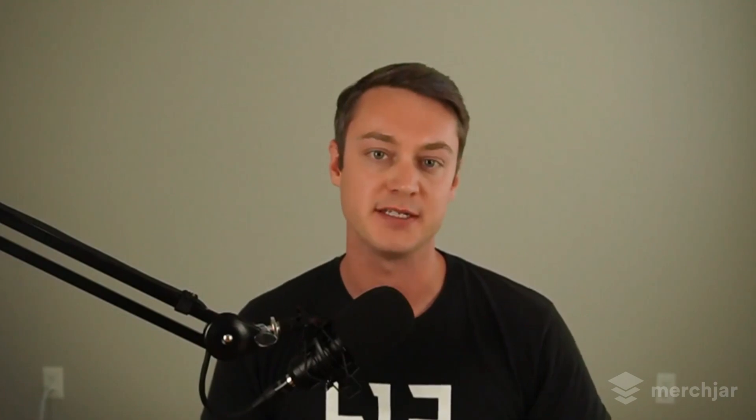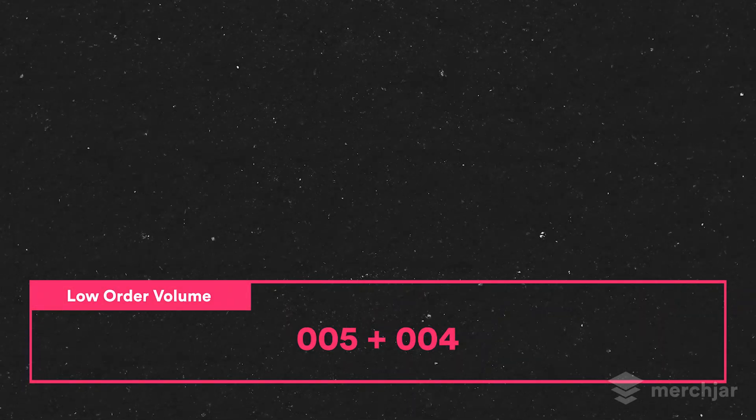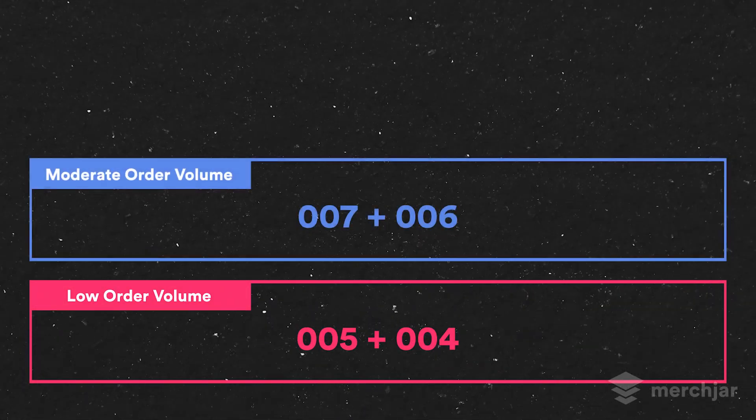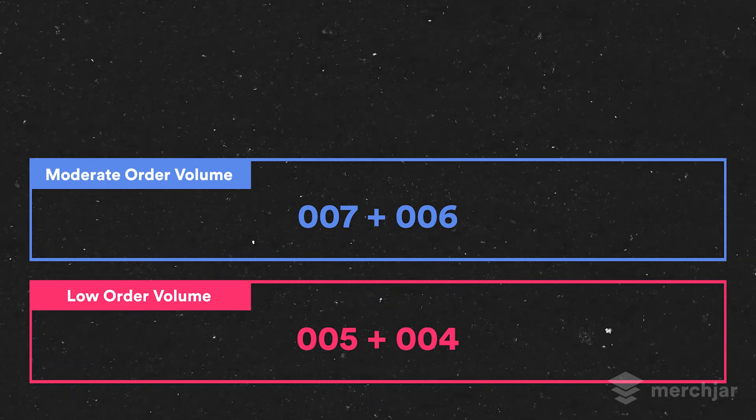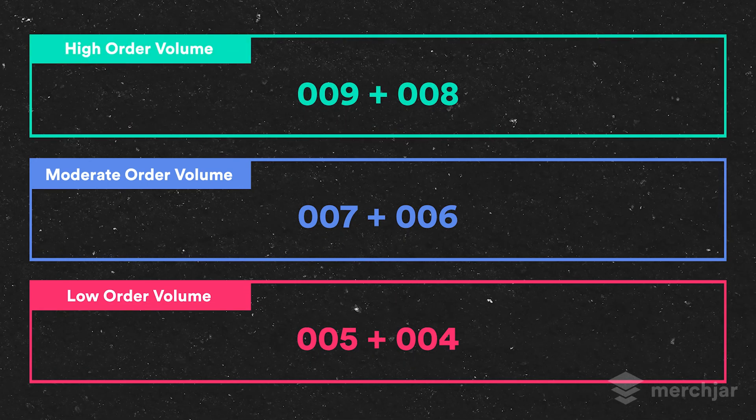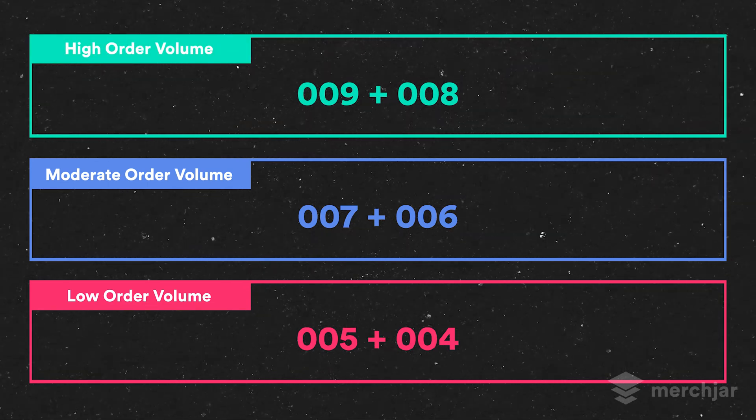We've also included optional recipes for very high ACOS targets and keywords to stagger your bid changes, making larger or more frequent adjustments for targets well above your target ACOS. Each very high ACOS recipe is paired with a high ACOS recipe based on the same order volume segmentation: recipe five is paired with recipe four, recipe seven with six, and recipe nine with recipe eight.